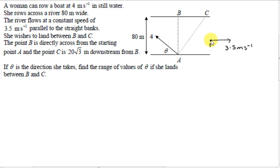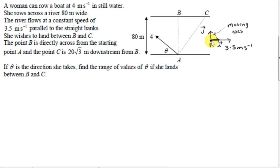We let R be the name of a point that's moving in the river. Let's suppose that the river is moving to the right, so a point in the river will be moving with a speed of 3.5 meters per second. We imagine a set of axes centered at R — these are moving axes when we are considering the velocity of the boat as seen from a point moving in the river.